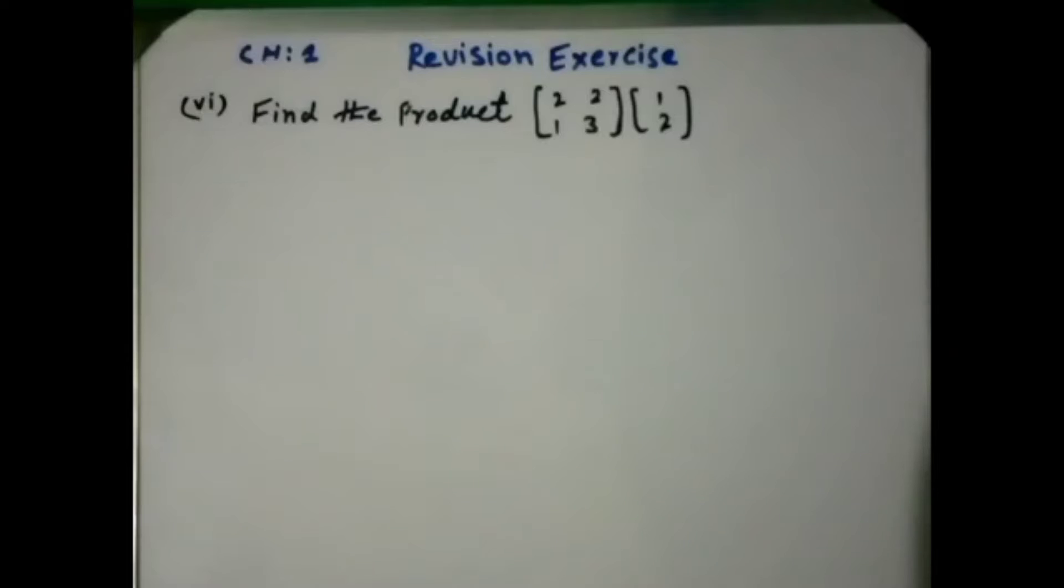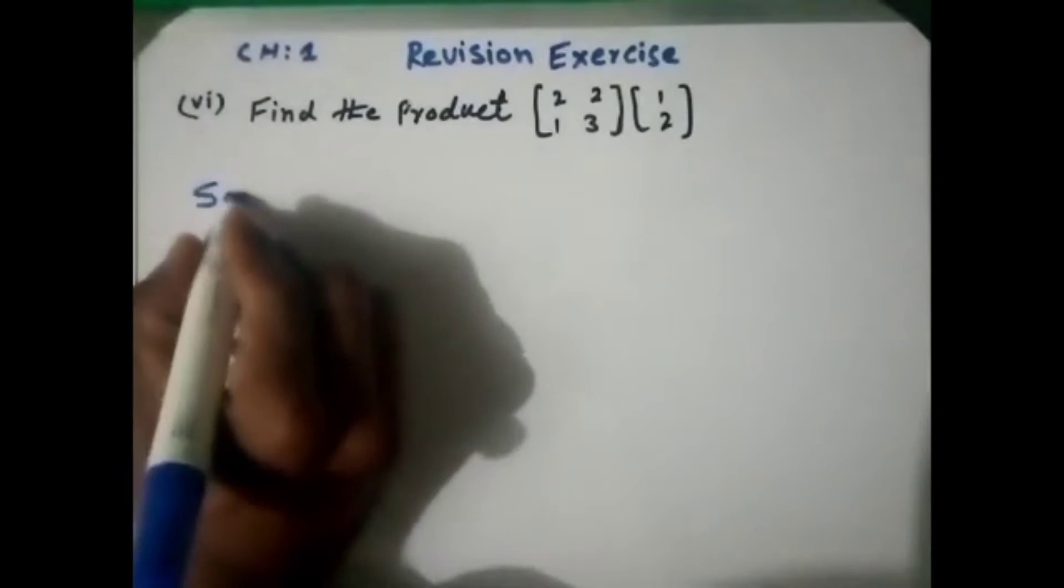Chapter 1 revision exercise, part number 6. The first five parts cover definitions, and part number 6 asks to find the product between two matrices. Let's discuss the solution.